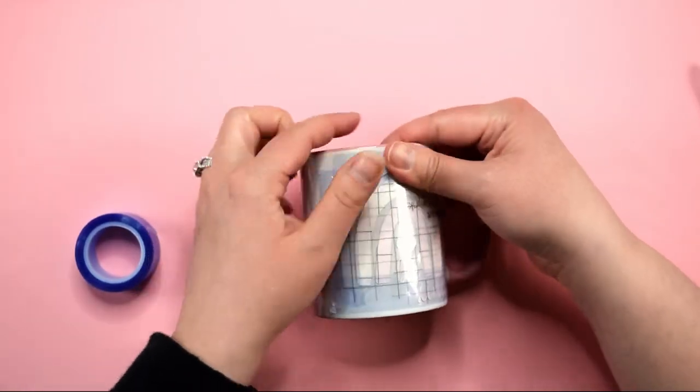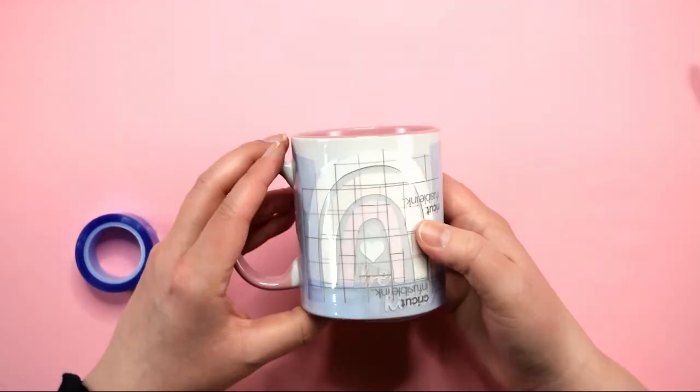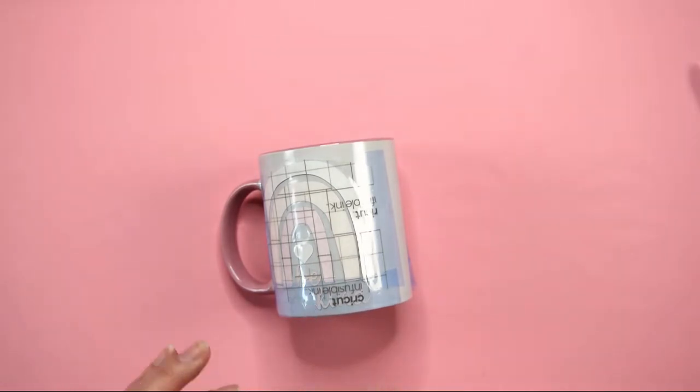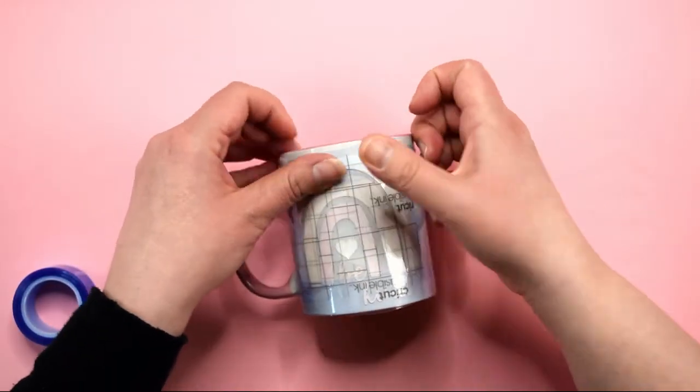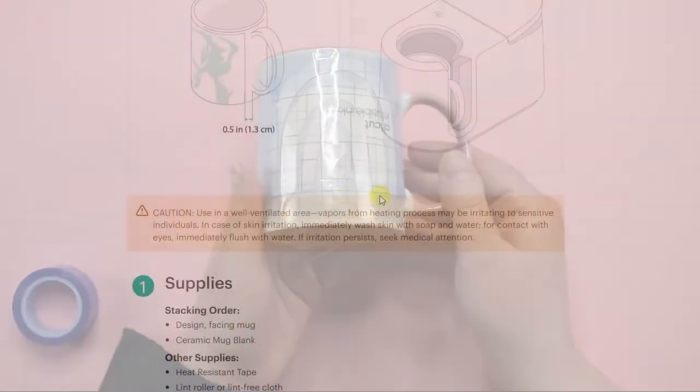Now I have seen this done with and without butcher paper but some do recommend placing a few layers of butcher paper on top of the infusible ink on the mug before it goes into your mug press. The worry is that the infusible ink could bleed through onto the mug press which could ruin it. I typically will add layers of butcher paper around my design but didn't do that for this mug and it worked out fine. So I would just do what you feel most comfortable with here.